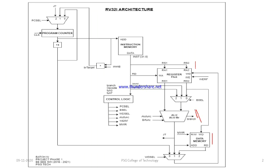Since it is a RISC architecture, we have dedicated hardware which generates control signals based on the opcode and the function field. Since it is a RISC architecture, we cannot directly operate on operands residing in data memory, so by using load and store instructions we need to make those operands available in the register file so that we can process them.